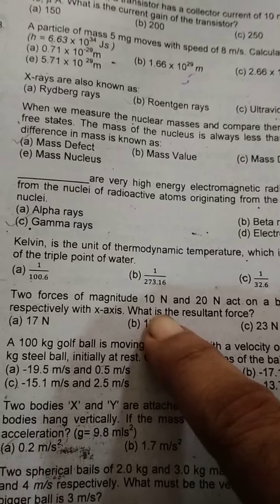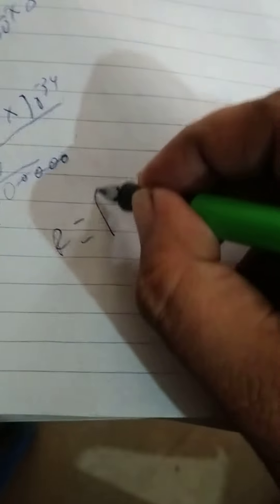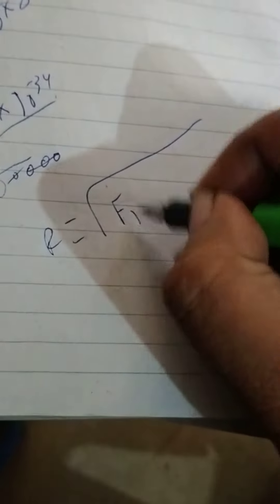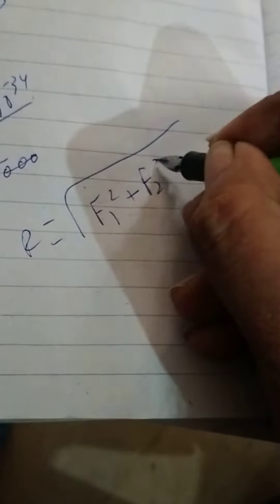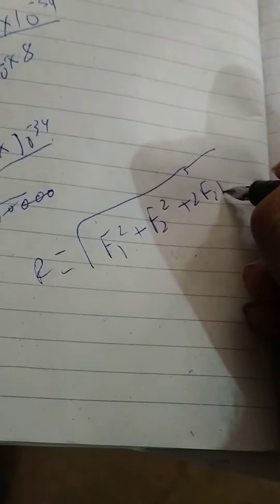Now let's take a look at this. 10 Newton and 20 Newton force, angle is 30 and 60 degrees. This is the resultant force. Now the formula is this: F1 square plus F2 square plus 2F1 F2 cos theta.